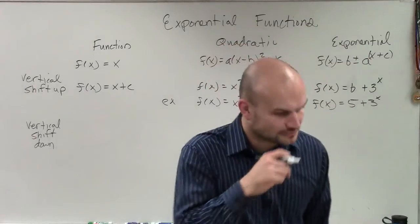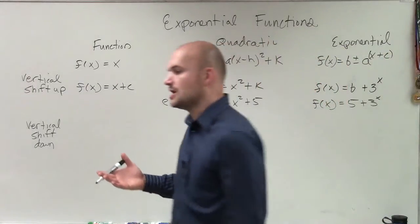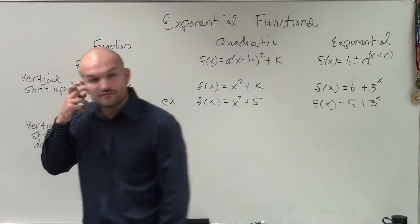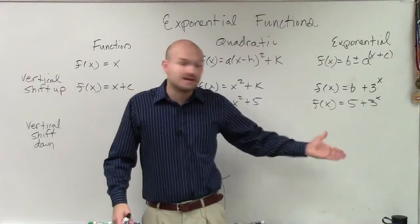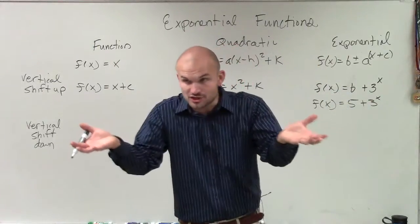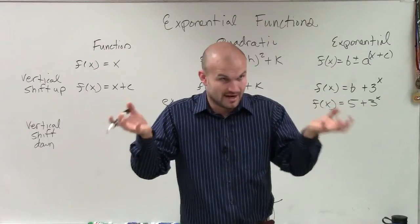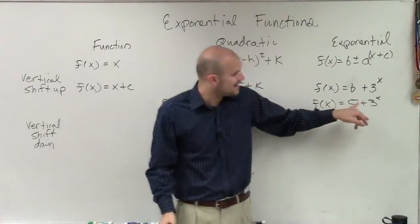Now obviously, you can have the 5 after, which we'll talk about a little bit later. You don't always have to have it written in front, but we like to write it in front. But just so you guys can understand, that's a positive 5 and that's positive 5 that's being added outside the function, right? Because our function is a to the x. Remember I wrote up there a to the x - that's our function. Since we're adding the 5 outside the function, it's going to vertically shift it.